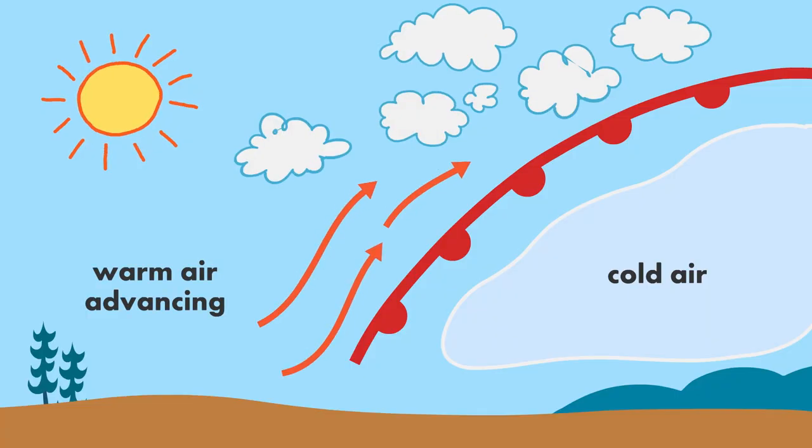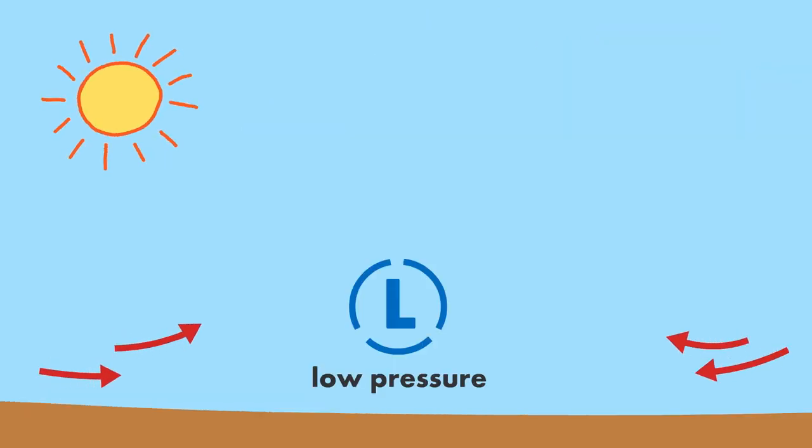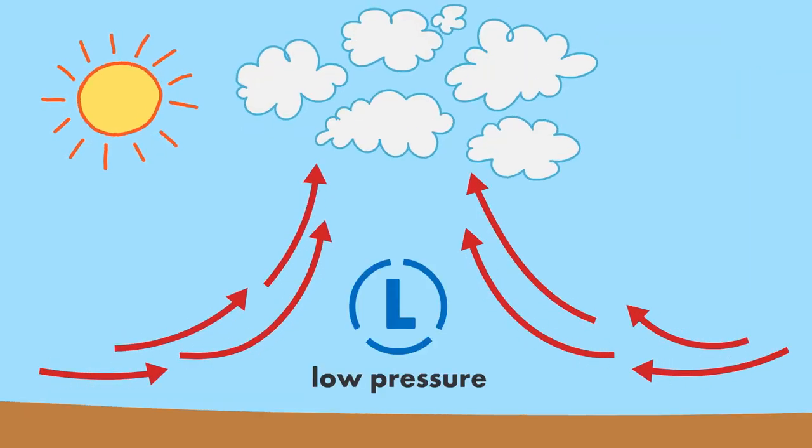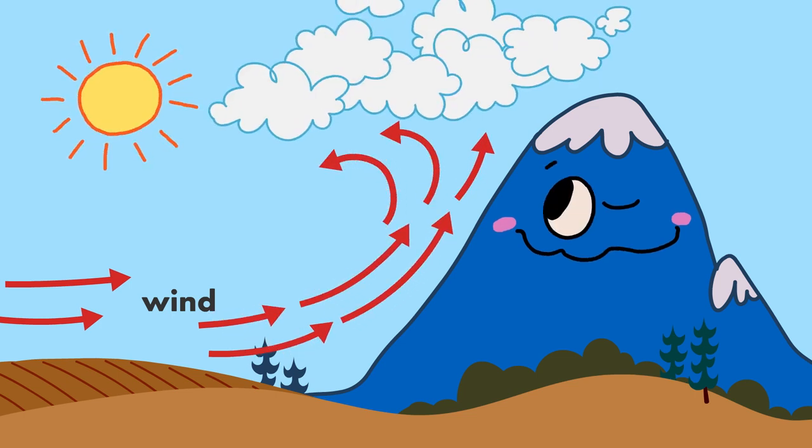Clouds can form in many places where air is rising, at weather fronts, where air is heated at the Earth's surface, where air is forced to rise in areas of low pressure, or when wind encounters a mountain range and has nowhere to go but up.